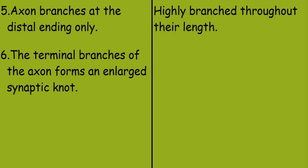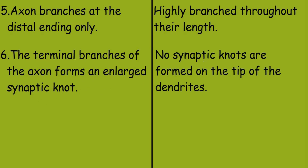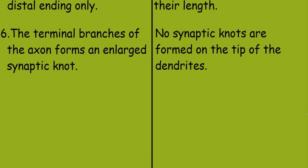The terminal branches of the axon form an end synaptic knot, while no synaptic knots are formed on the tip of the dendrites.